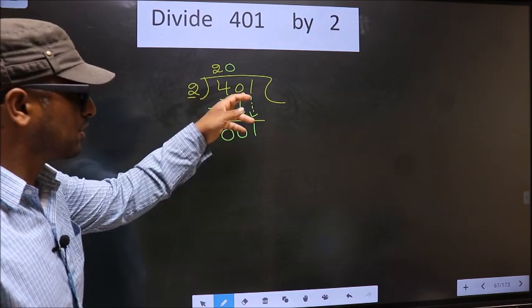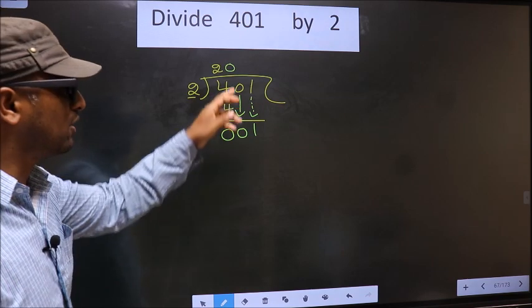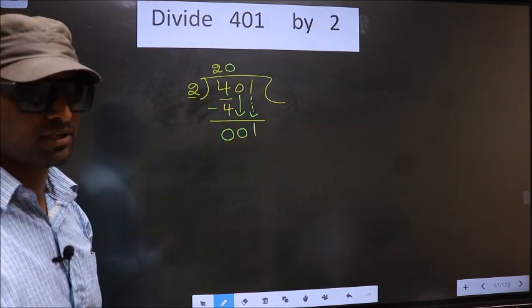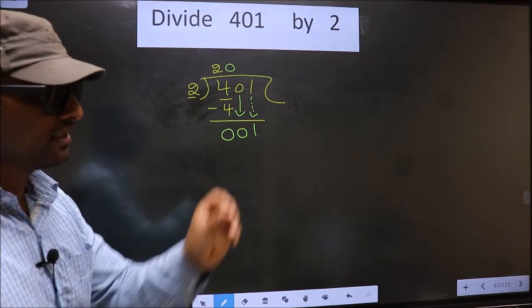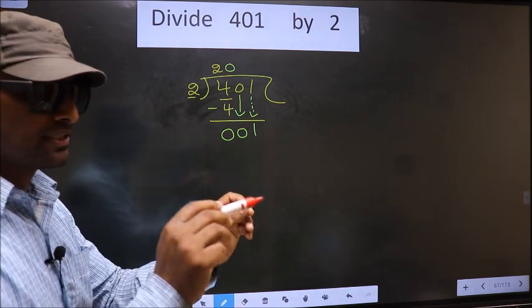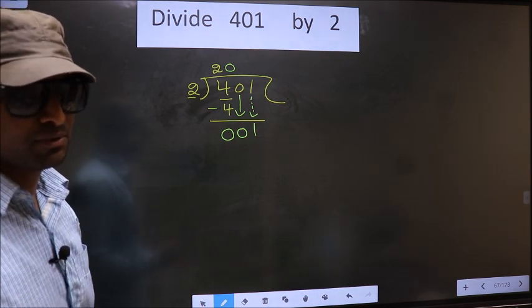Just now you brought the number down. And in the same step, you want to put a dot and take 0 here, which is wrong. I repeat. Bringing the number down and putting a dot and taking 0, both at the same step, you are not supposed to do.